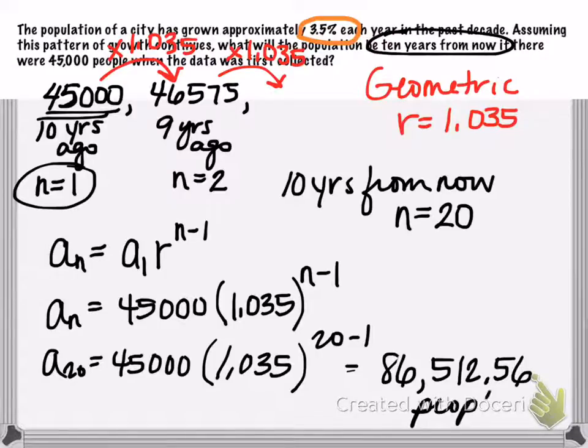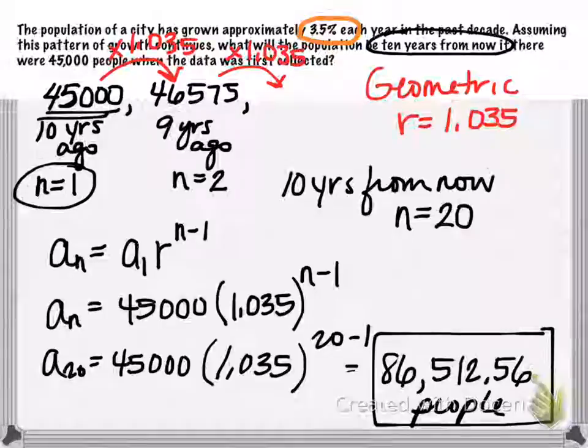And I know you cannot have 0.56 of a person, but I like to go ahead and list this decimal here so you can really check your calculations in your calculator to make sure that they are accurate. So anyway, let's finish this. So let's give it a look.